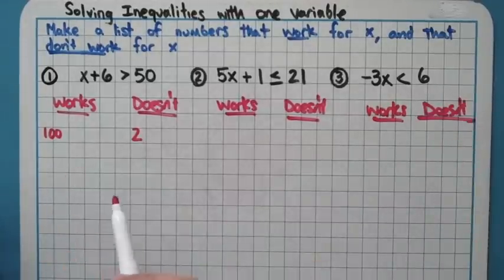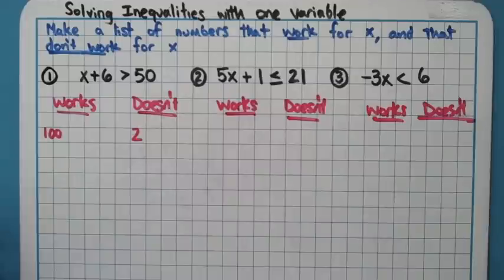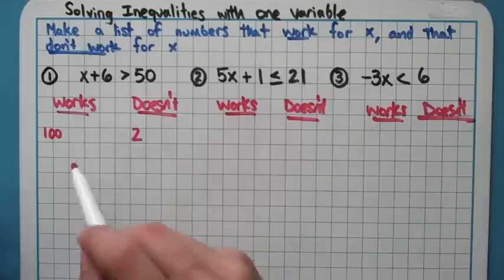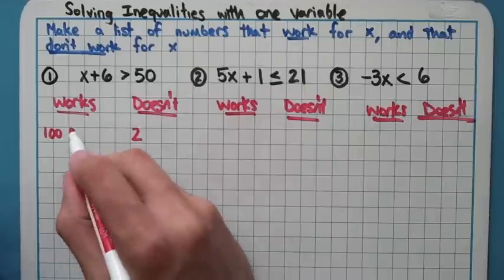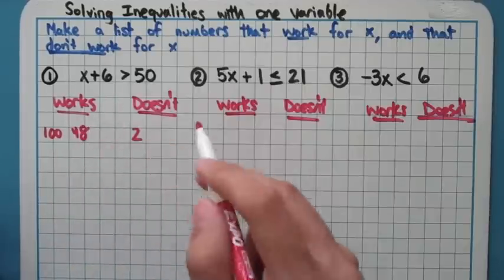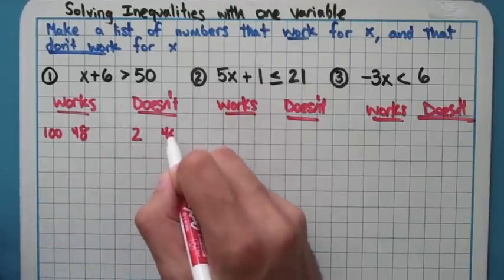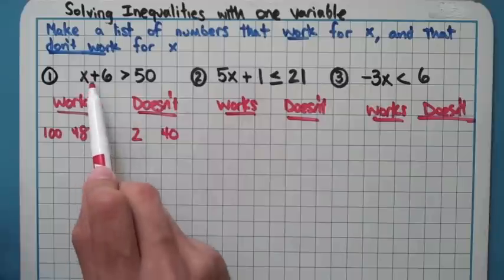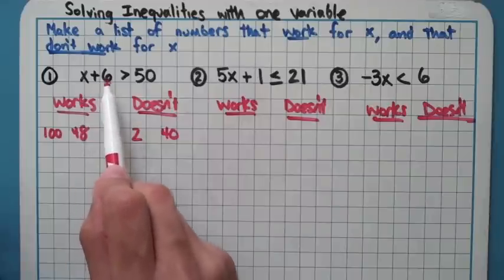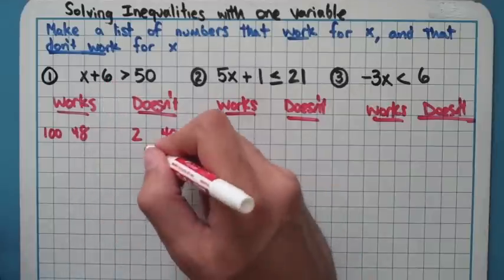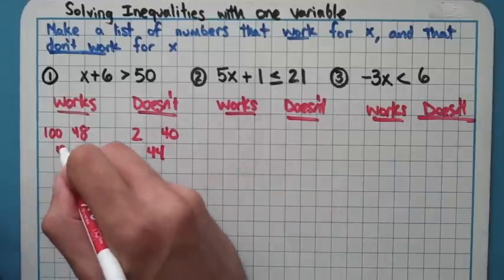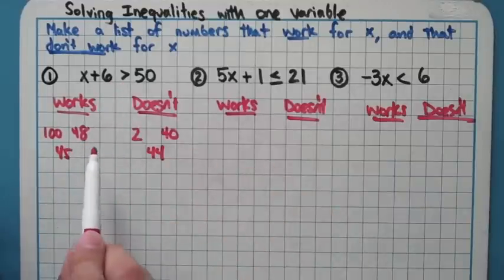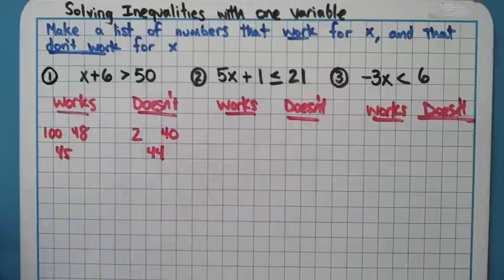If you think about just random numbers right here, if you plug in like 48, you get 54, that works. But if you plug in 40, 40 + 6 is only 46, 40 didn't work. Basically the cutoff point on this one is 44. If you plug in 44 here, you get exactly 50, but 50 isn't bigger than 50. So 44 didn't work, but 45 would get you 51 which is bigger than 50. The cutoff - basically numbers that are bigger than 44 seem to work in that one.